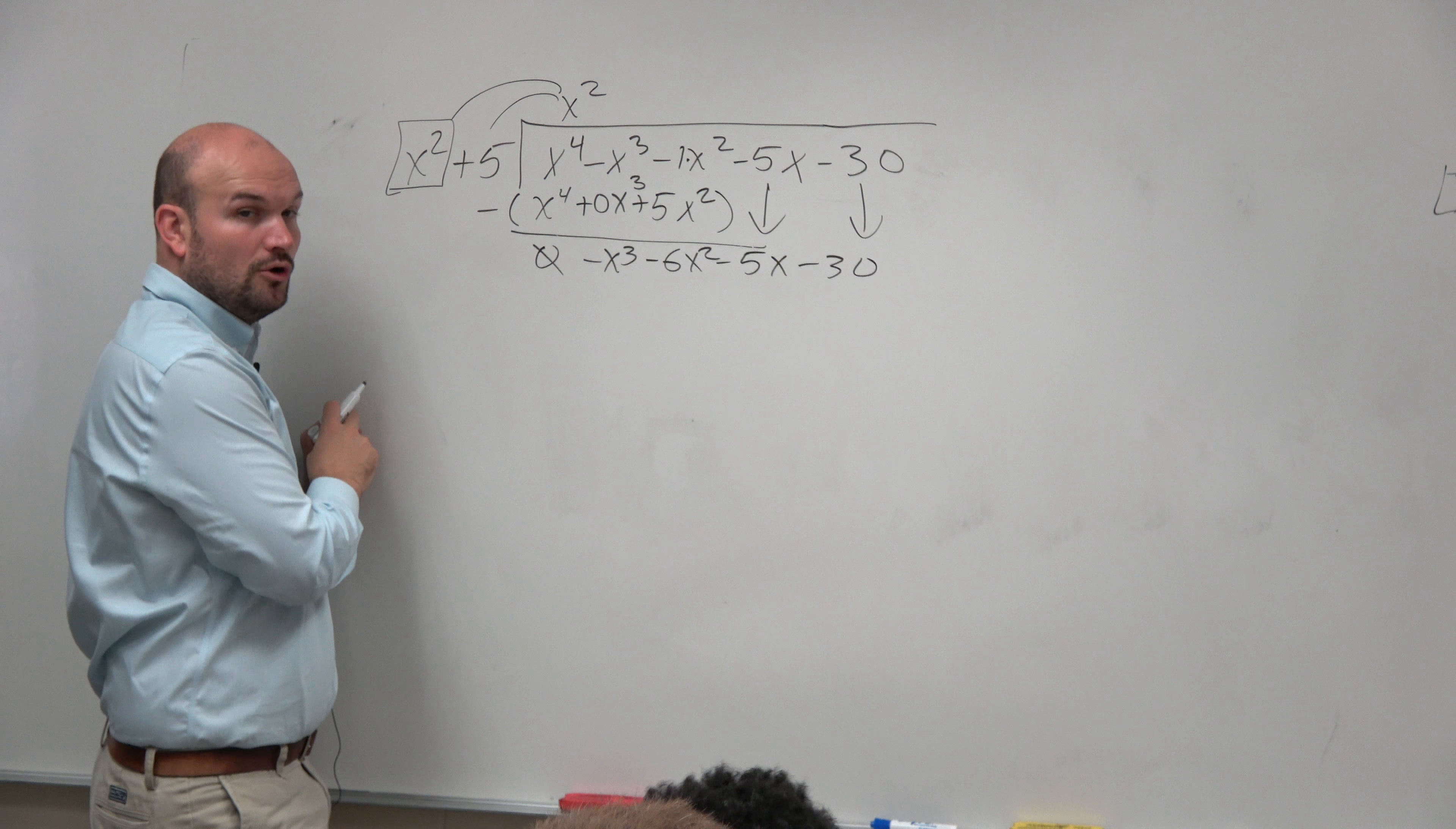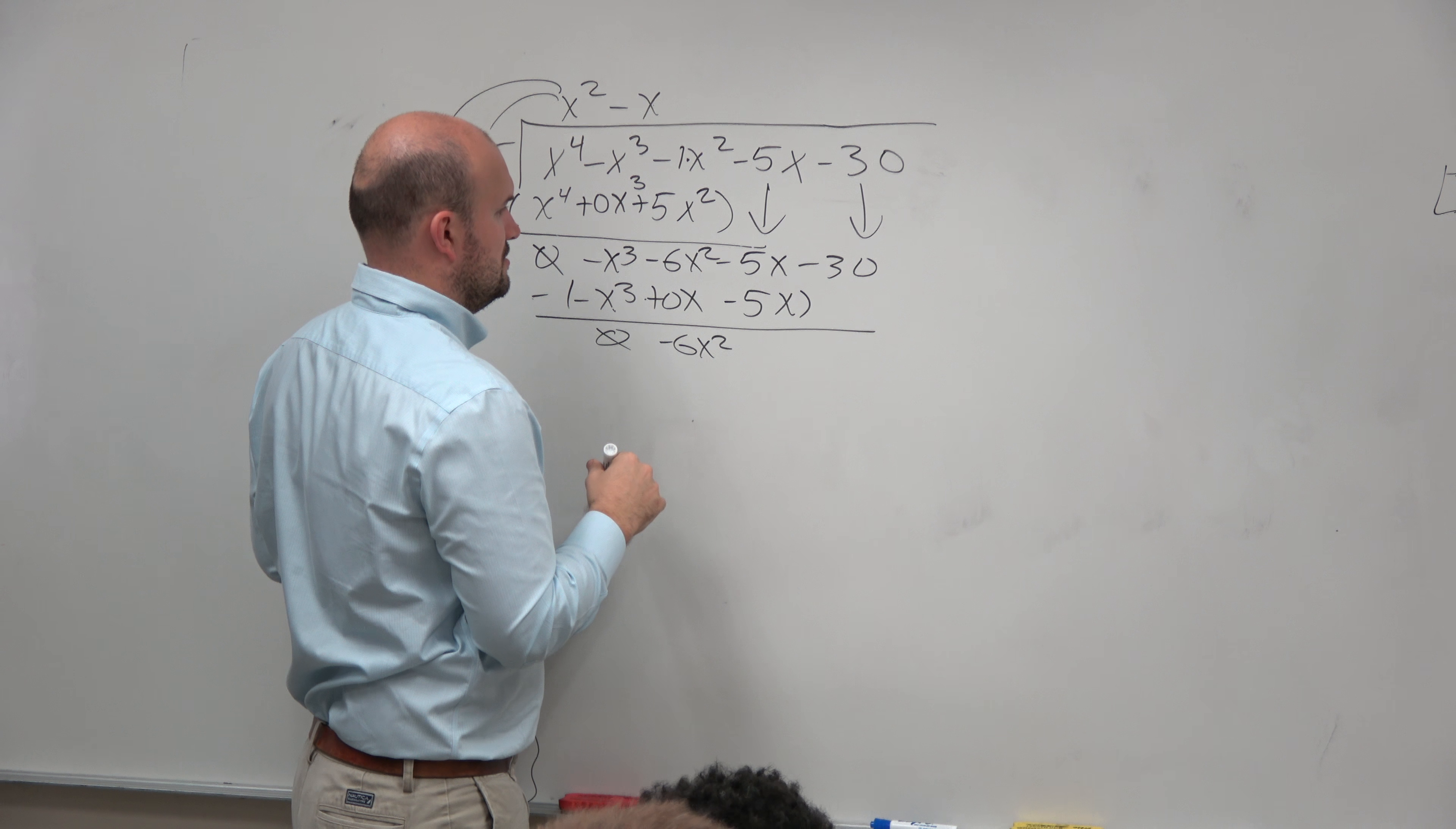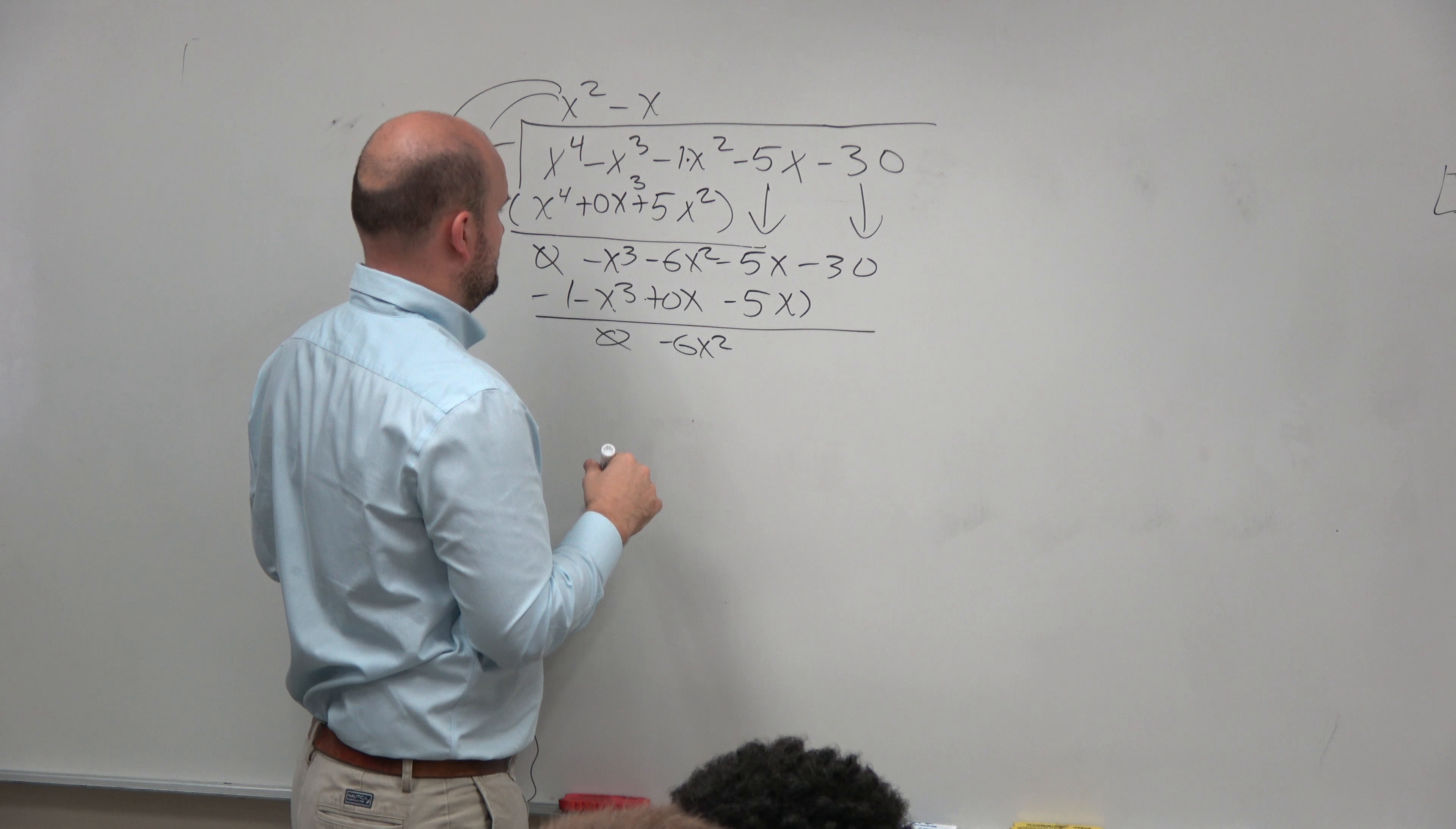Negative x times x squared is negative x cubed. Negative x times 5 is negative 5x. So again, we've got to align them. I'll use a place value there. Subtract my rows. Negative x cubed minus negative x cubed is going to be 0. Negative 6 really is just negative 6x squared. Negative 5x minus a negative 5x is going to be 0. What did I do? Oh, it's positive, right? Yeah, it's positive. Yeah, so it's negative x minus a negative... positive 5x. It becomes 0x, right? Can you change that one? No. And then we bring down our negative 30. Yeah, 0x. And then we bring down our negative 30.